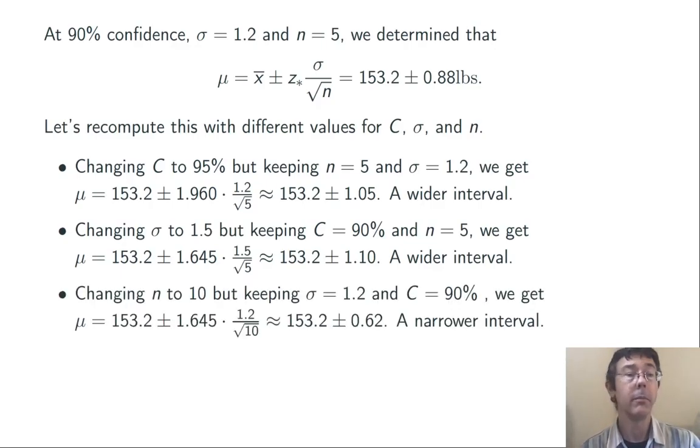Finally, keeping σ at 1.2 and confidence level 90%, but changing n from 5 to 10, we get a margin of error of 0.62. This time the margin of error is less, the confidence interval is more narrow.